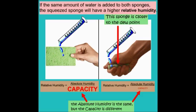If the same amount of water is added to both the open sponge and the squeezed sponge, the squeezed sponge will have a higher relative humidity, and it's closer to its dew point. This is because both sponges have the same absolute humidity, but the sponge on the left has a higher capacity than the sponge on the right.